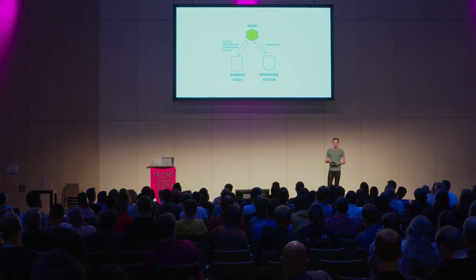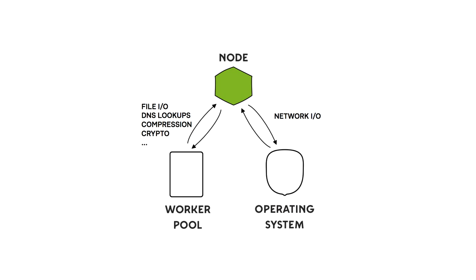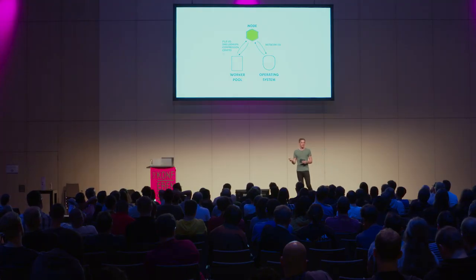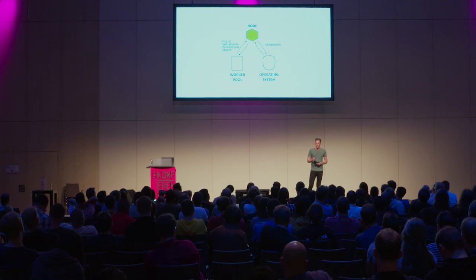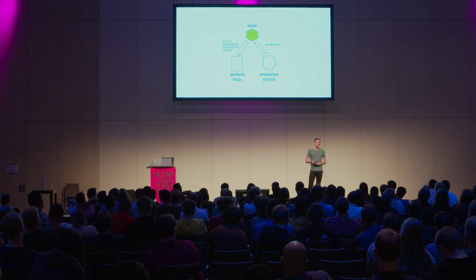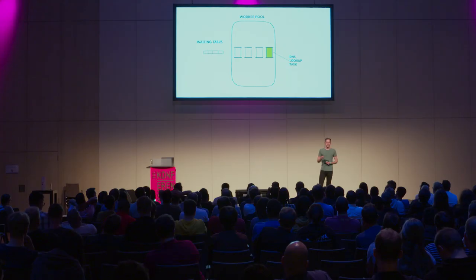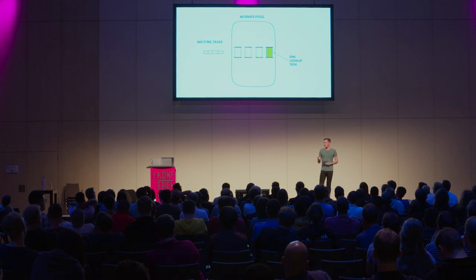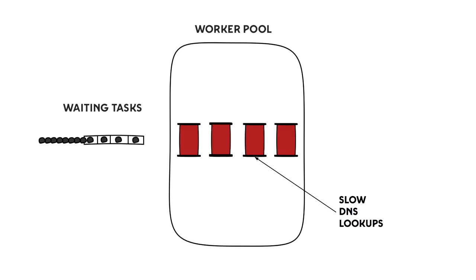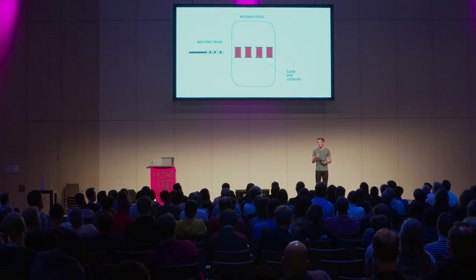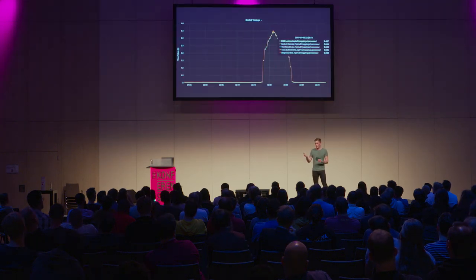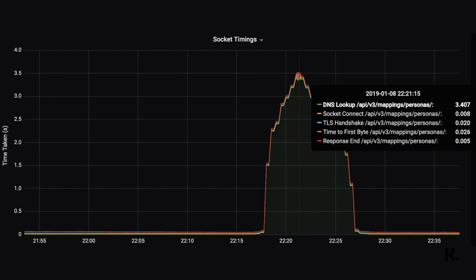We're not doing any file I/O, compression, or cryptography, but we are doing outgoing HTTP requests, which means we must be doing DNS lookups. Let's hypothesize that for some reason the DNS lookups are taking a really long time. We have a worker pool with four threads, and when we perform an outgoing request, Node submits a DNS lookup task to the worker pool. If that task is slow, we're reducing the size of the pool, and if all tasks are running slow, we have a blocked pool. The waiting task queue builds up and we're not able to respond quickly enough. I added some metrics and voilà — the time for DNS lookups spiked dramatically whenever this problem was happening.